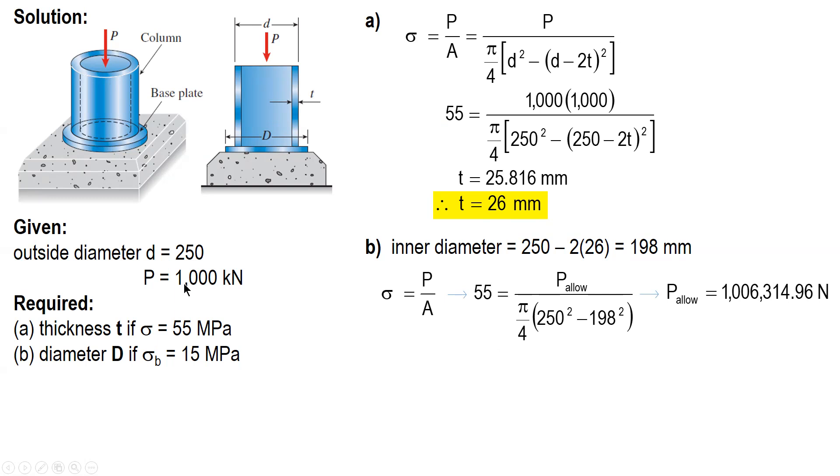A little higher than 1,000 kilonewtons. Now using this value, we now solve for the diameter of the base plate using the formula for bearing stress. Given, and for the area we have pi over 4 D squared. And solving for D gives us 292.26 millimeters.